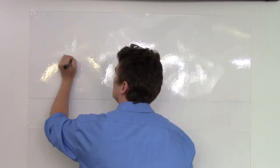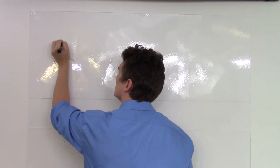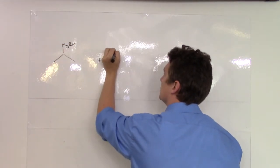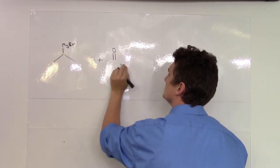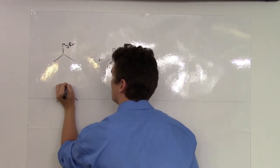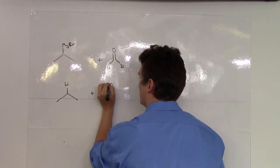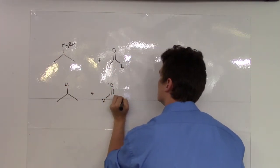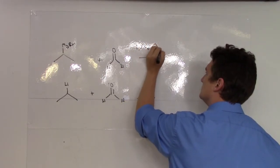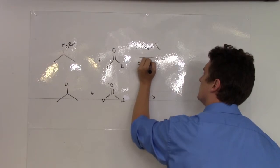So, let's say we had this Grignard reacted with formaldehyde plus this organo-lithium complex reacted with the same formaldehyde. In both cases, we're going to start out with diethyl ether, and we're going to finish with an acid workup.